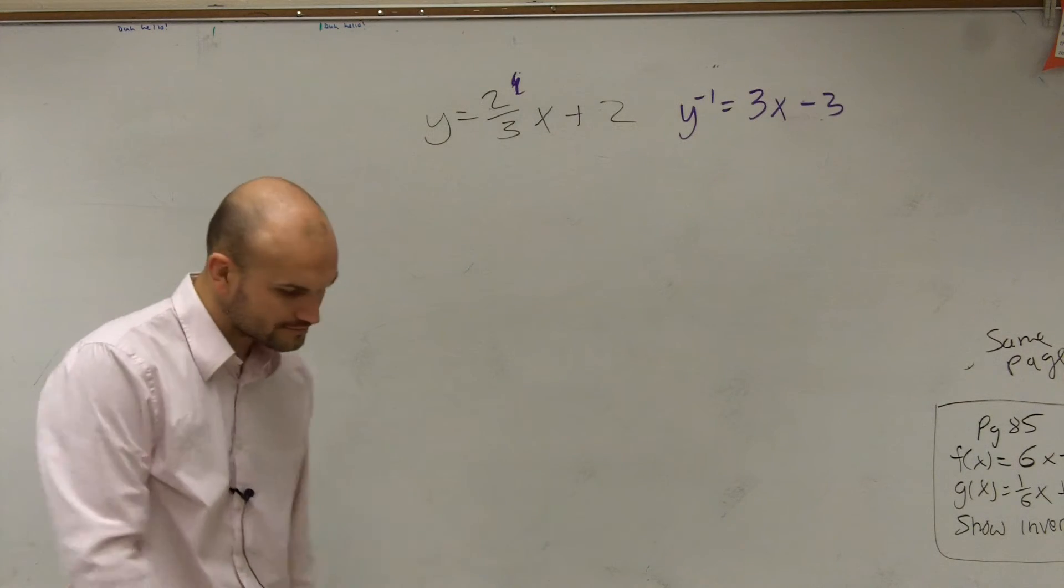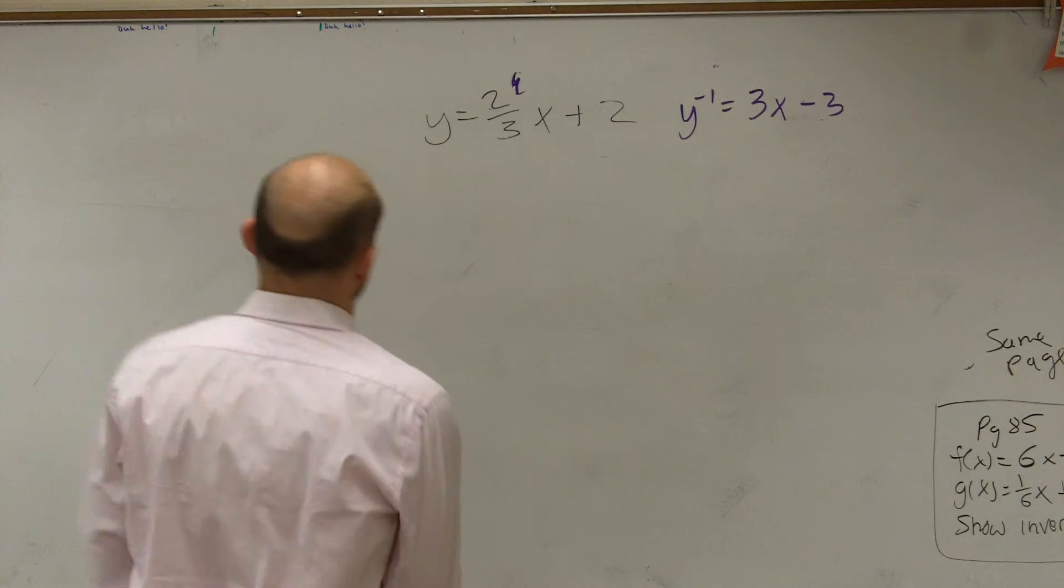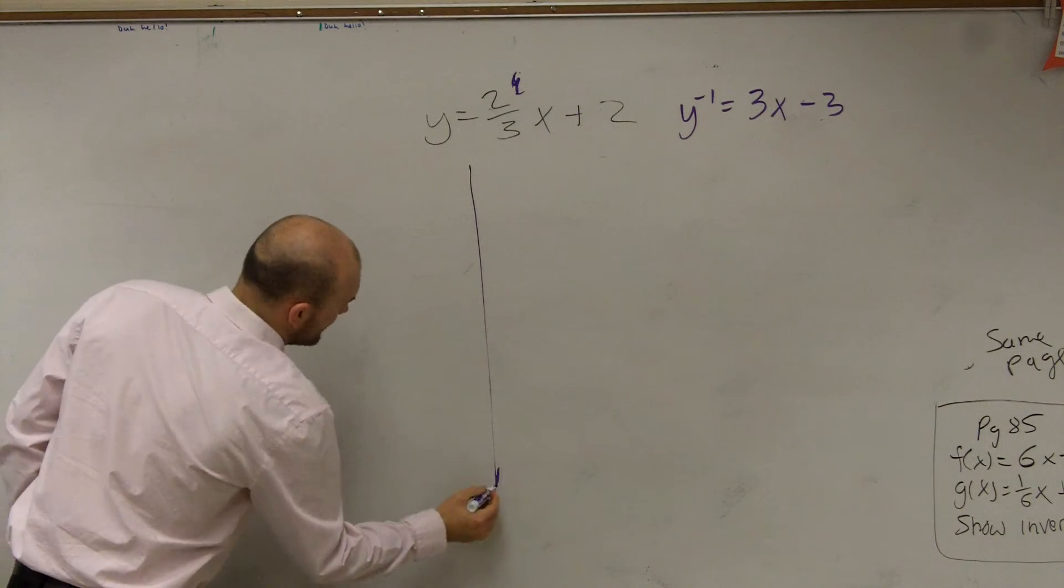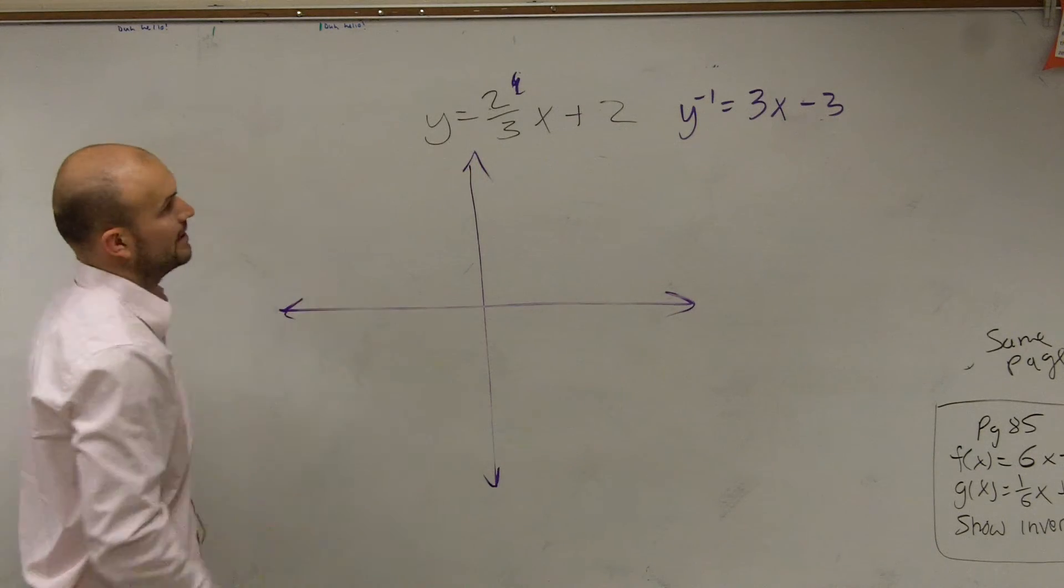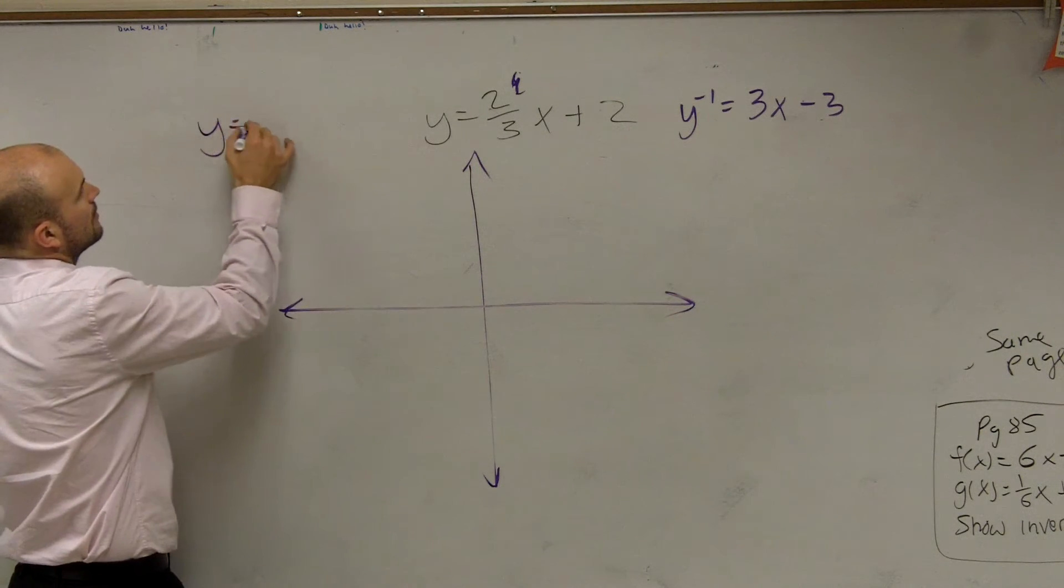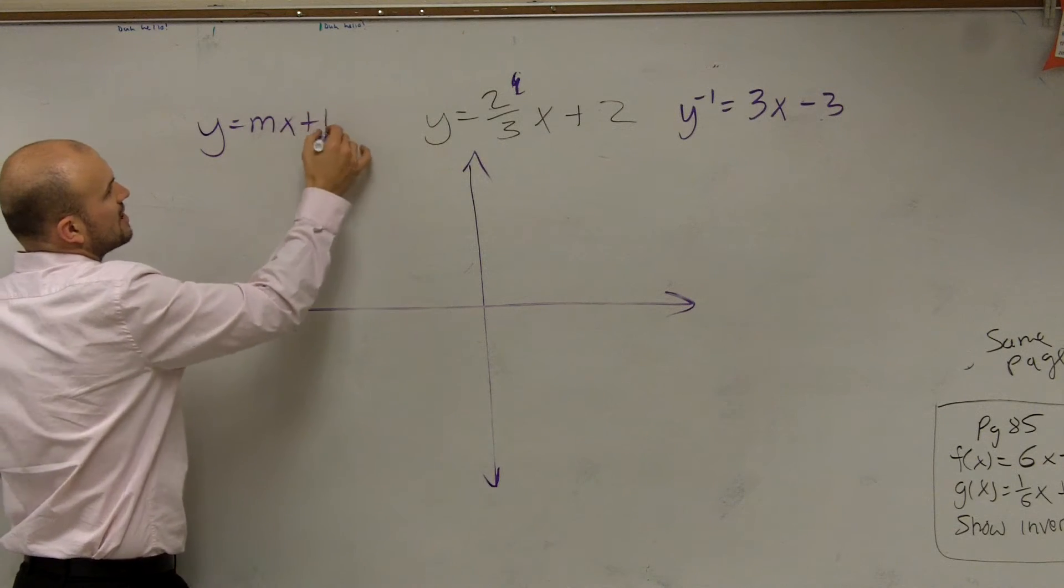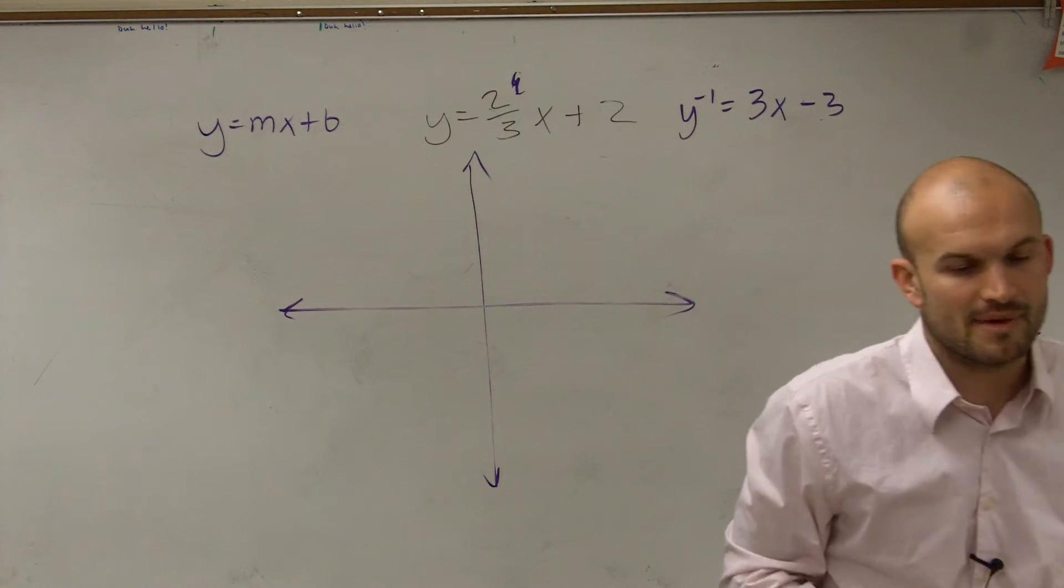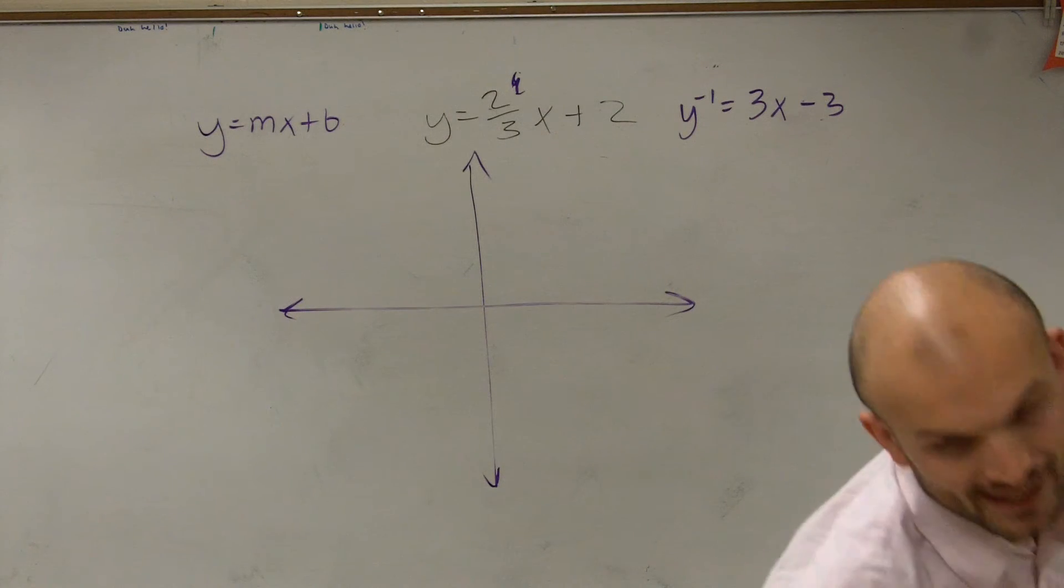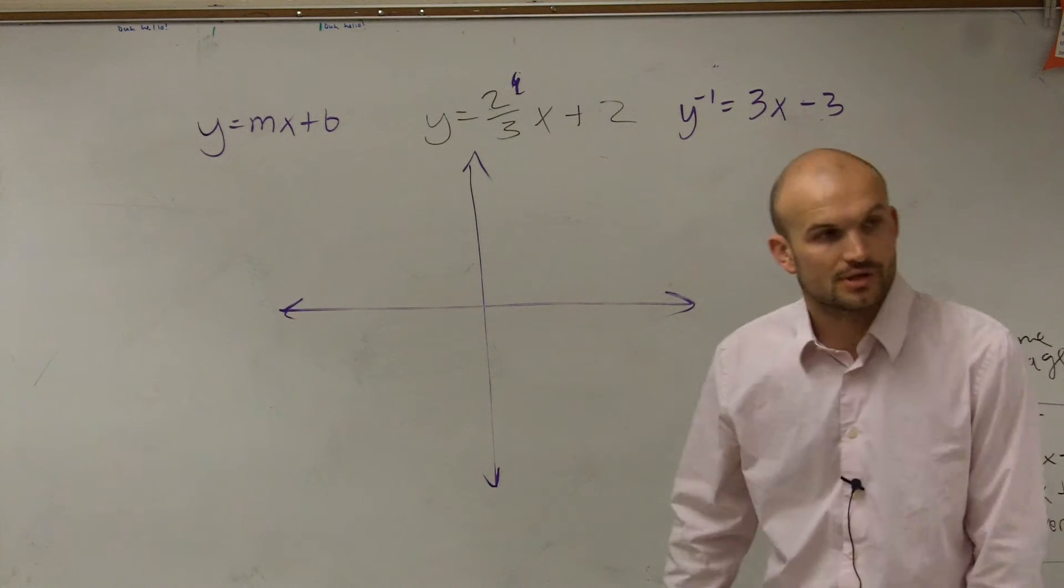All right. So the graph looks something like that, right? So let's graph this. Guys, remember, all linear functions can be written in the form y equals mx plus b. Remember, b is your y-intercept, and m is your slope.